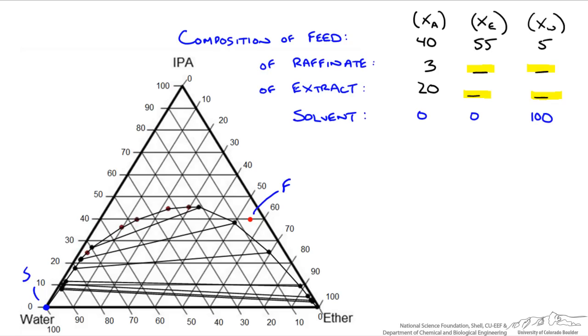Now our extract and raffinate phases have to be at equilibrium, not with each other but leaving the appropriate stages. Our extract has alcohol of 20%, so we know that's closer to our solvent side. We look for where 20% for our alcohol is on our equilibrium curve—that's right here. We'll do the same thing for our raffinate on the other side, looking for about 3%, somewhere around right here. So we have our four points.